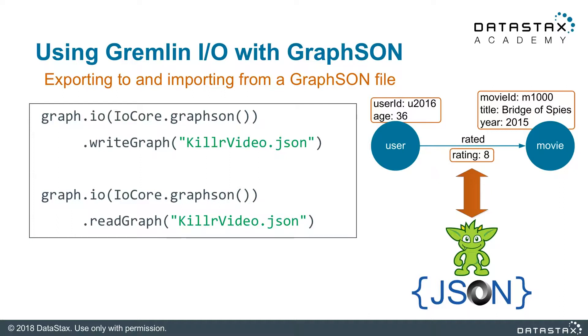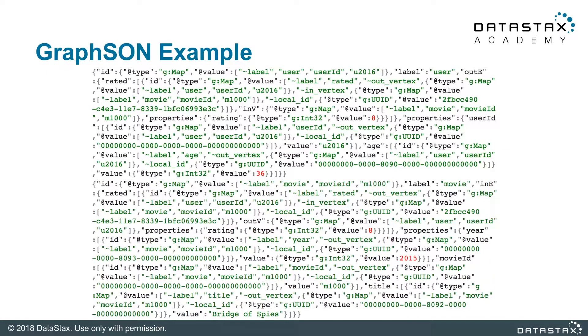For additional customizations, please see the documentation. Here's what a GraphSON file looks like for our two vertices and one edge. As you can see, it's in JSON format and it's human-readable.